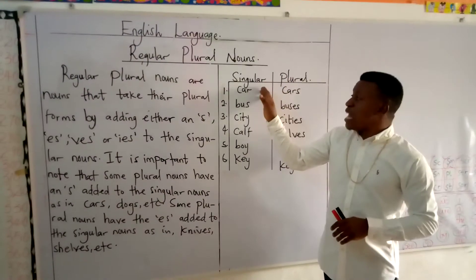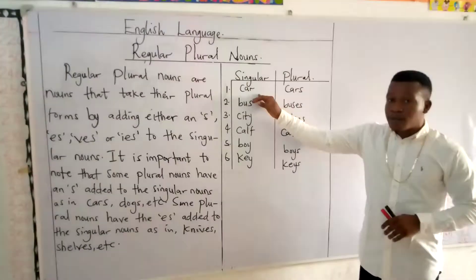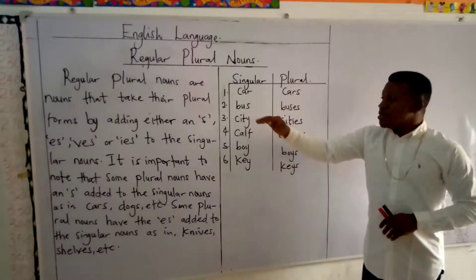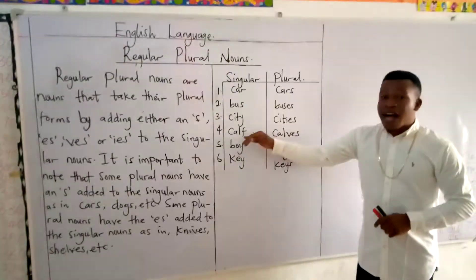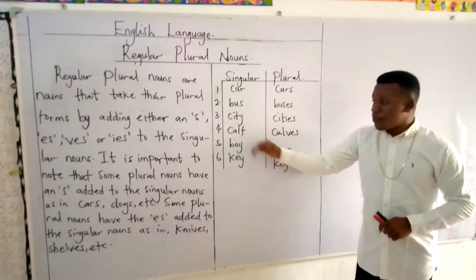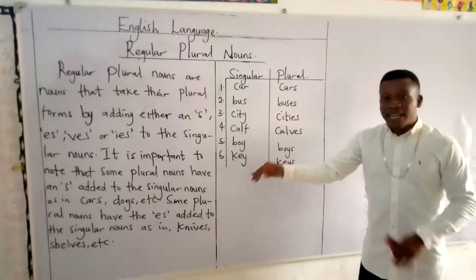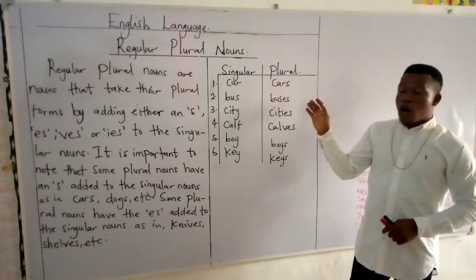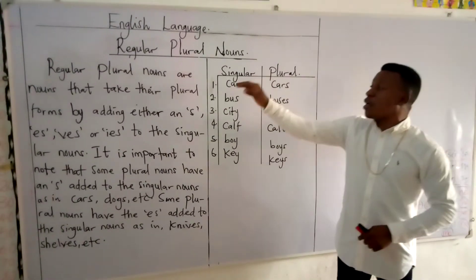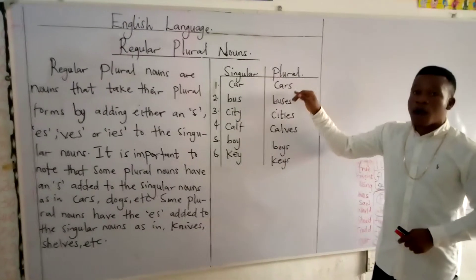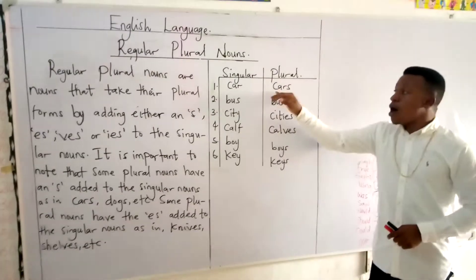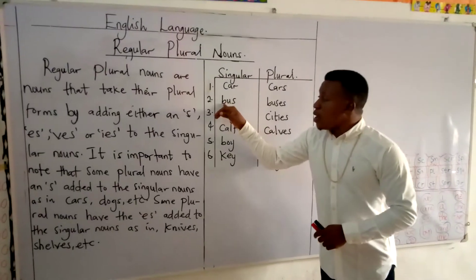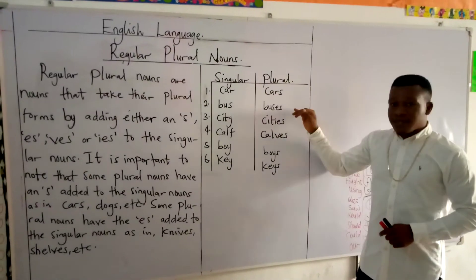For the singular nouns, we have: car, bus, city, calf, boy, key. Now for us to write these in the plural form — for car, we have cars. For bus, we have buses.